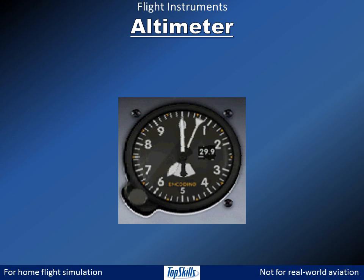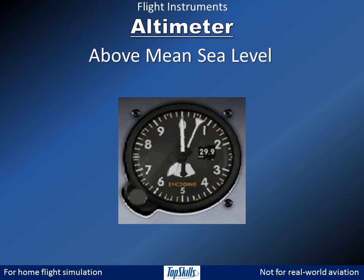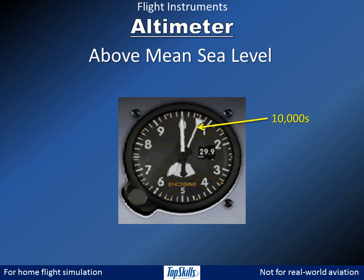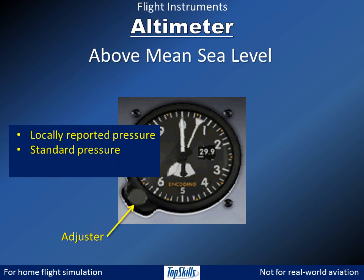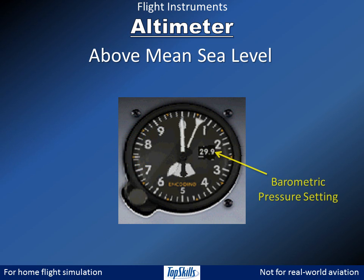Altimeters show altitudes above mean sea level. This example shows in feet. Some altimeters show meters. The long needle indicates hundreds of feet, the short needle indicates thousands of feet, and the skinny needle shows tens of thousands of feet. This altimeter shows 6,000 feet altitude. Pilots adjust their altimeters for locally reported barometric pressure or standard pressure, whichever is appropriate for the altitude or flight level. The current pressure setting is shown numerically in a small window.